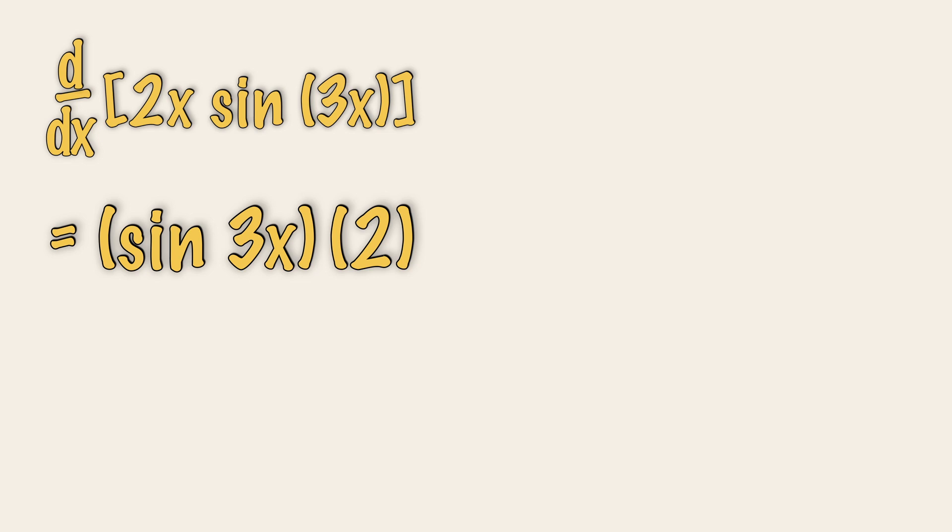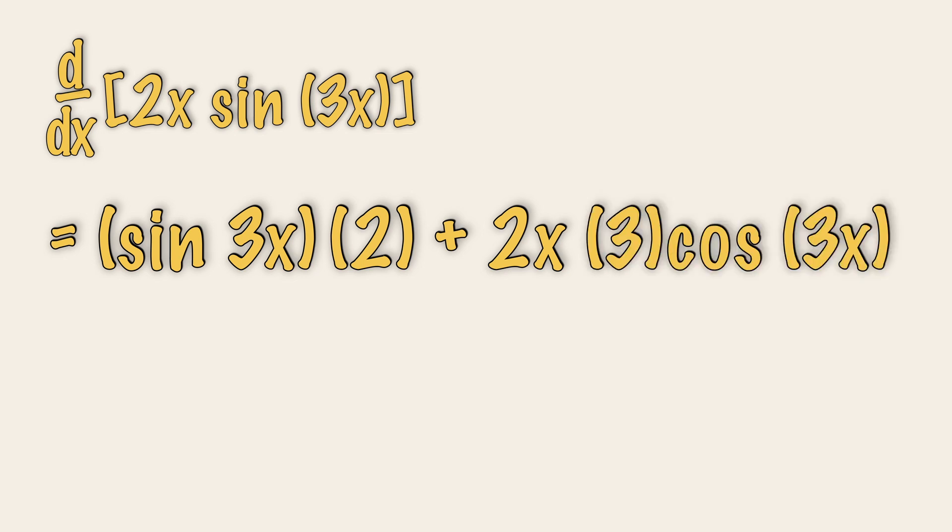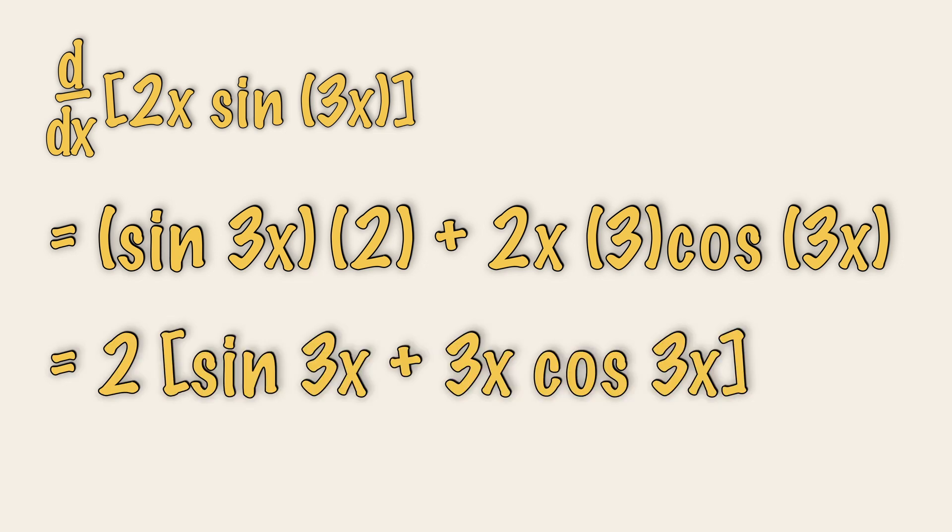Product rule starts with the letter p, introduce the plus sign. Keep the first part, which is 2x. Differentiate the second part, which is 3 cosine 3x. Now let's try to simplify this by factorizing 2. We will have 2 multiplied with sine 3x plus 3x cosine 3x. Now this is a derivative of this expression.